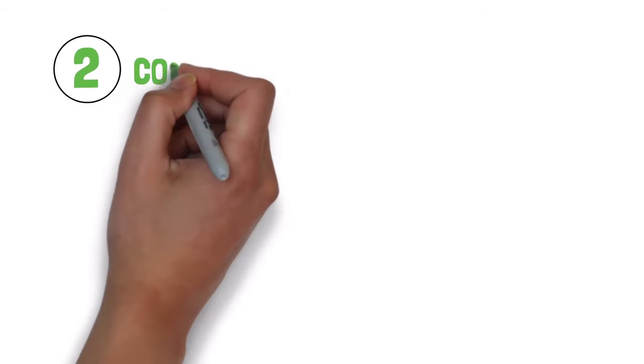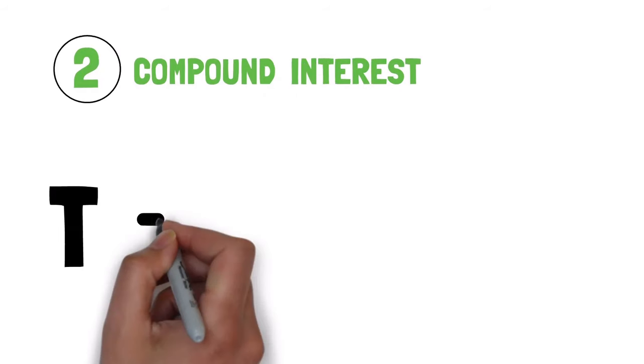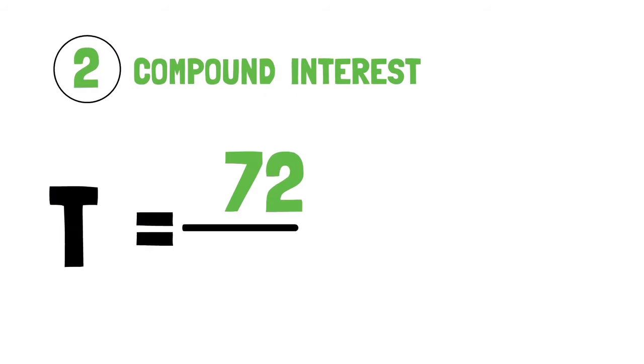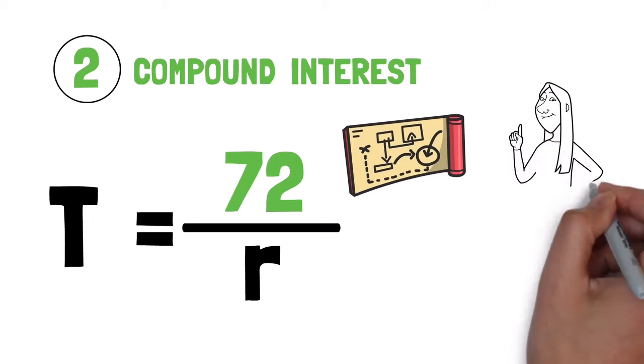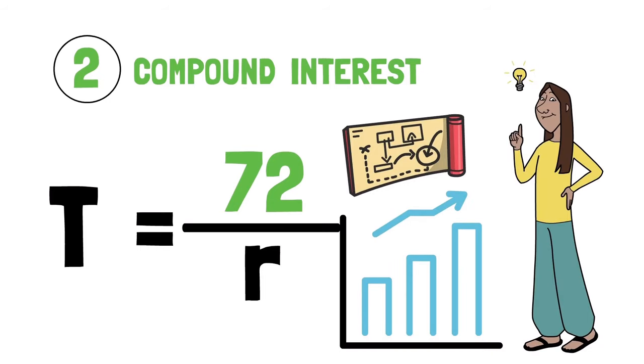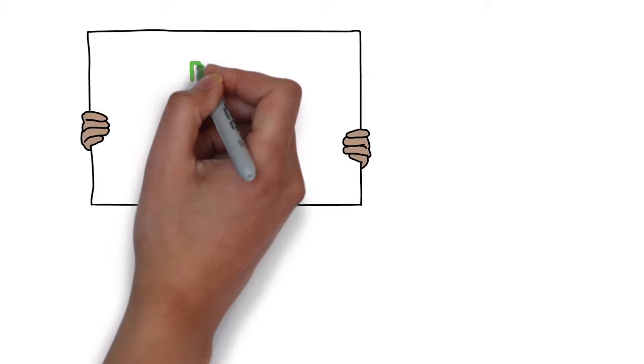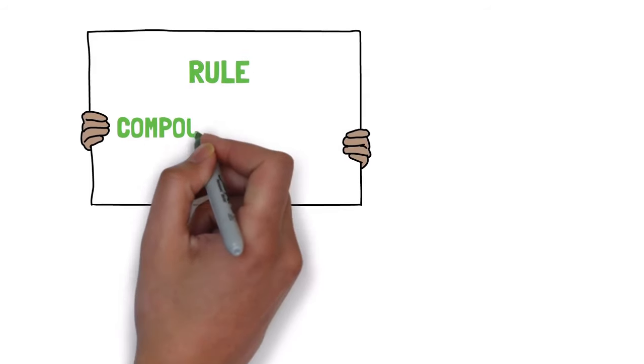Pillar number two: compound interest. As stated before, the rule of 72 only works with compound interest. You have the secret recipe for financial success when you comprehend the rule and the power of compound interest. Having discussed the rule itself, let's talk about compound interest.